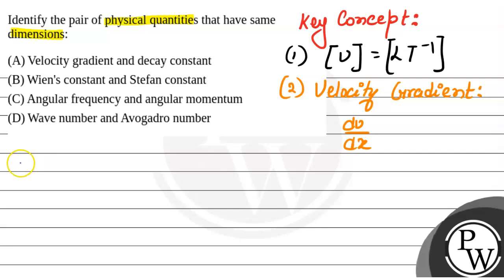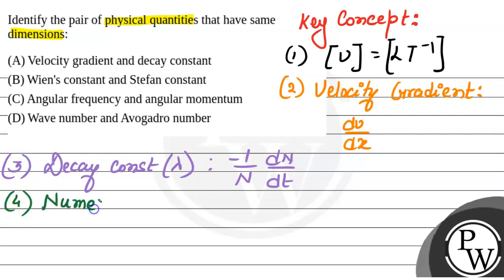On the other hand, decay constant, represented by lambda, is given by minus 1/n times dN/dT. Now there is a thing we need to know: numerical constants are dimensionless.